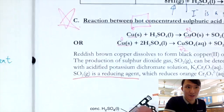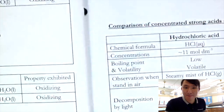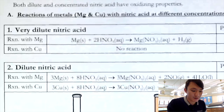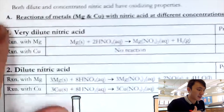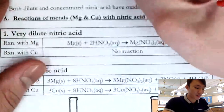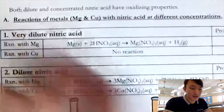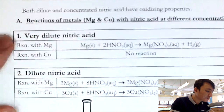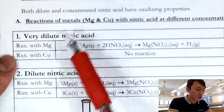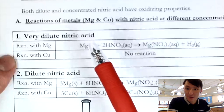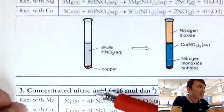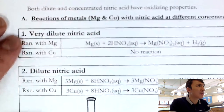Now we move on to nitric acid. Note that concentrated HCl is not really oxidizing, so we won't cover it. Nitric acid, however, is known to be very oxidizing — both dilute and concentrated forms are oxidizing, but to different extents. We'll examine reactions with magnesium and copper across three concentrations: very dilute (~1 mol/dm³), dilute, and concentrated nitric acid.